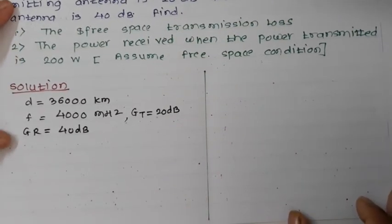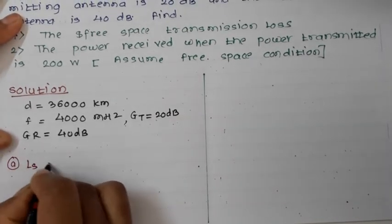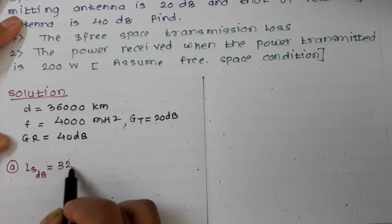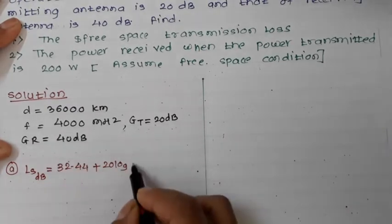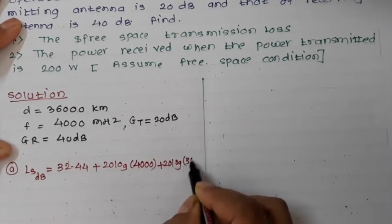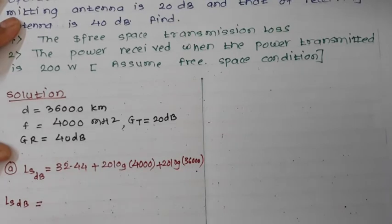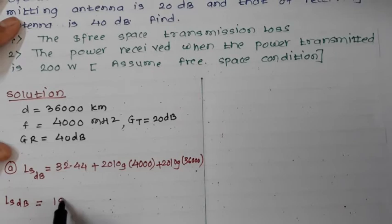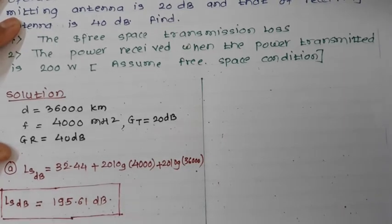We calculate the free space transmission loss using: LS (dB) = 32.44 + 20 log₁₀(f in MHz) + 20 log₁₀(d in km). Substituting f = 4000 MHz and d = 36,000 km: LS = 32.44 + 20 log(4000) + 20 log(36,000) = 195.61 dB. So the free space path loss is 195.61 dB.